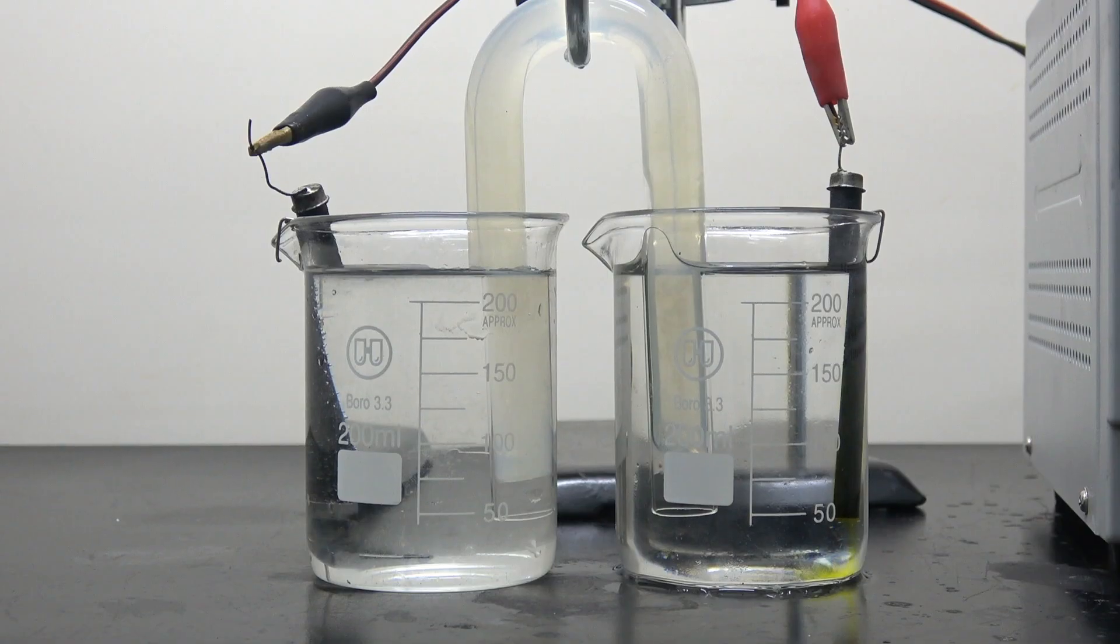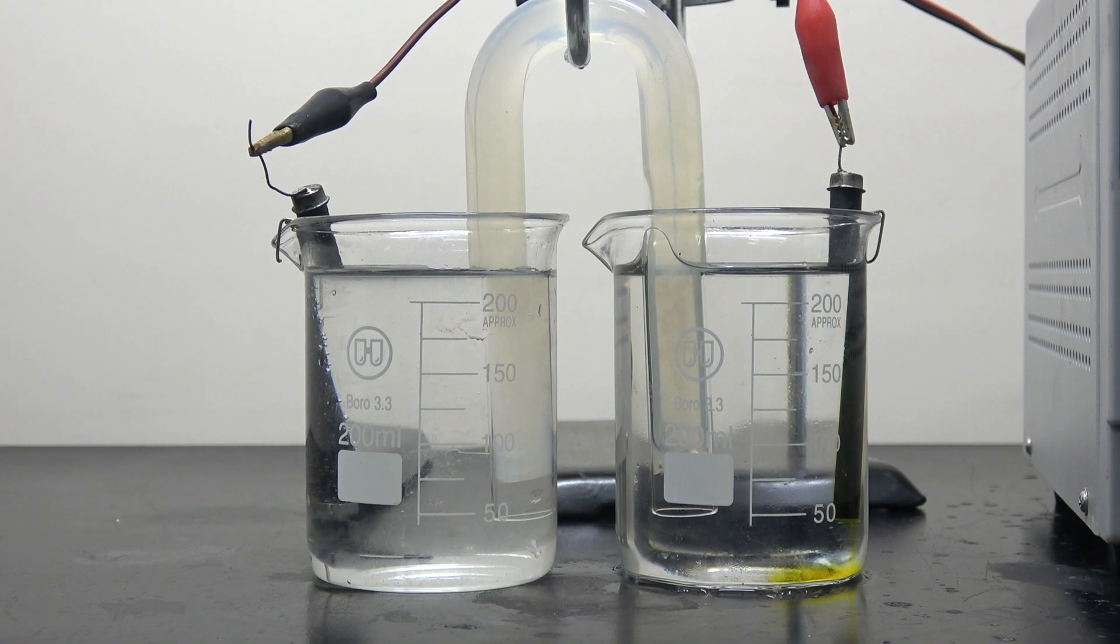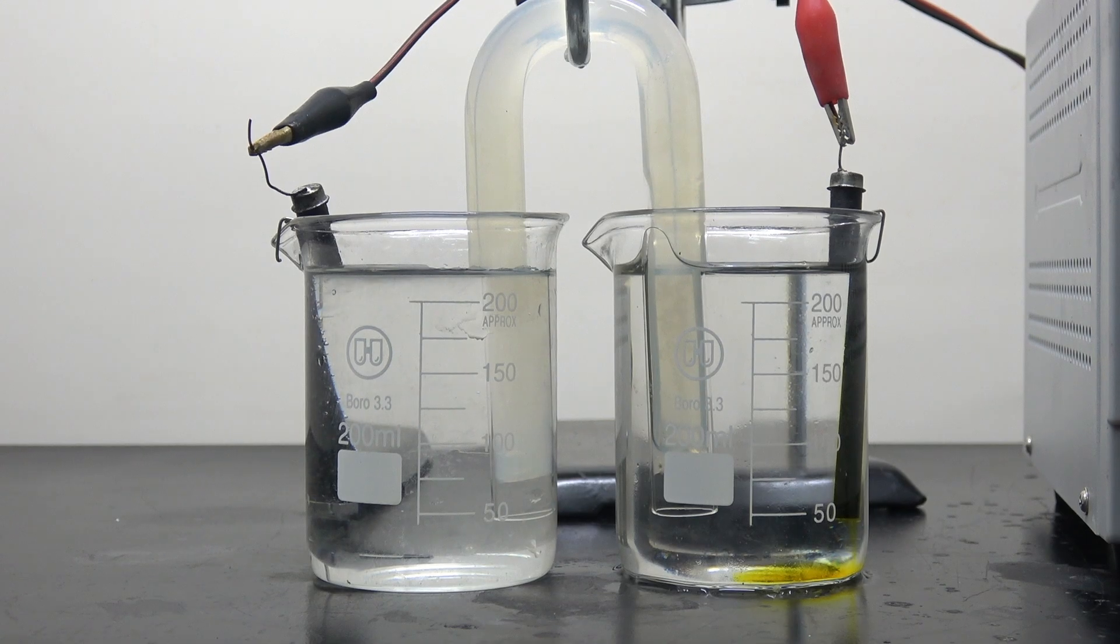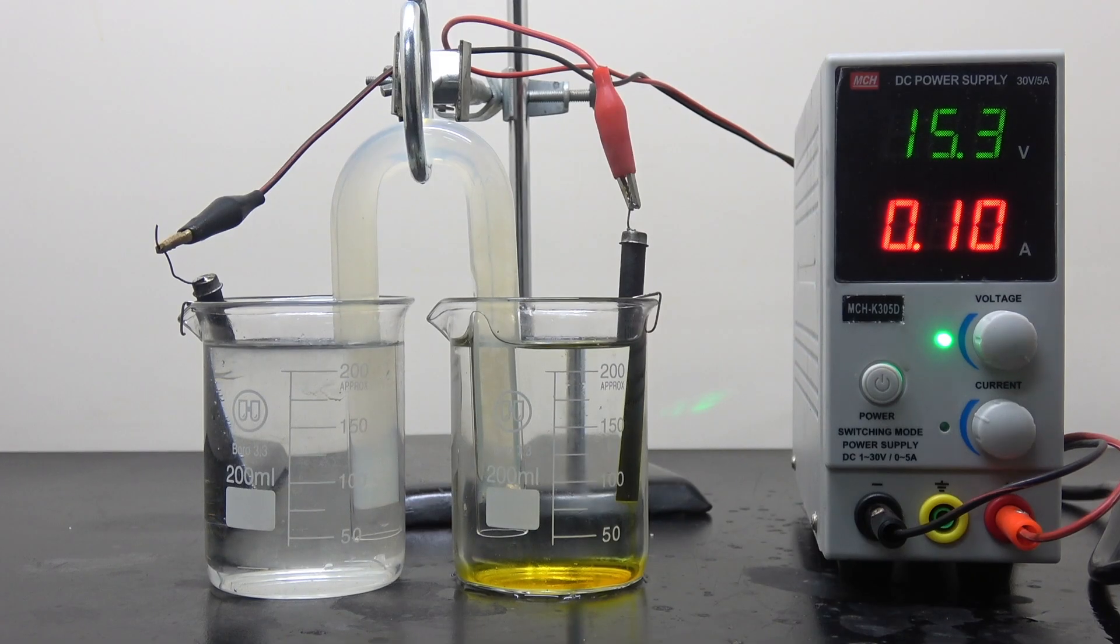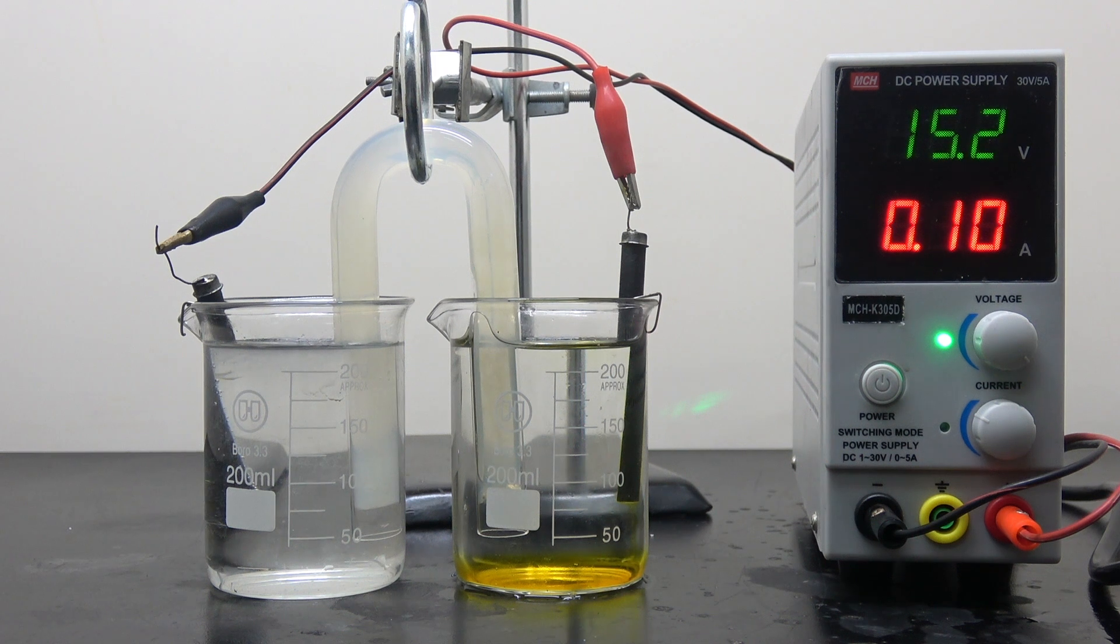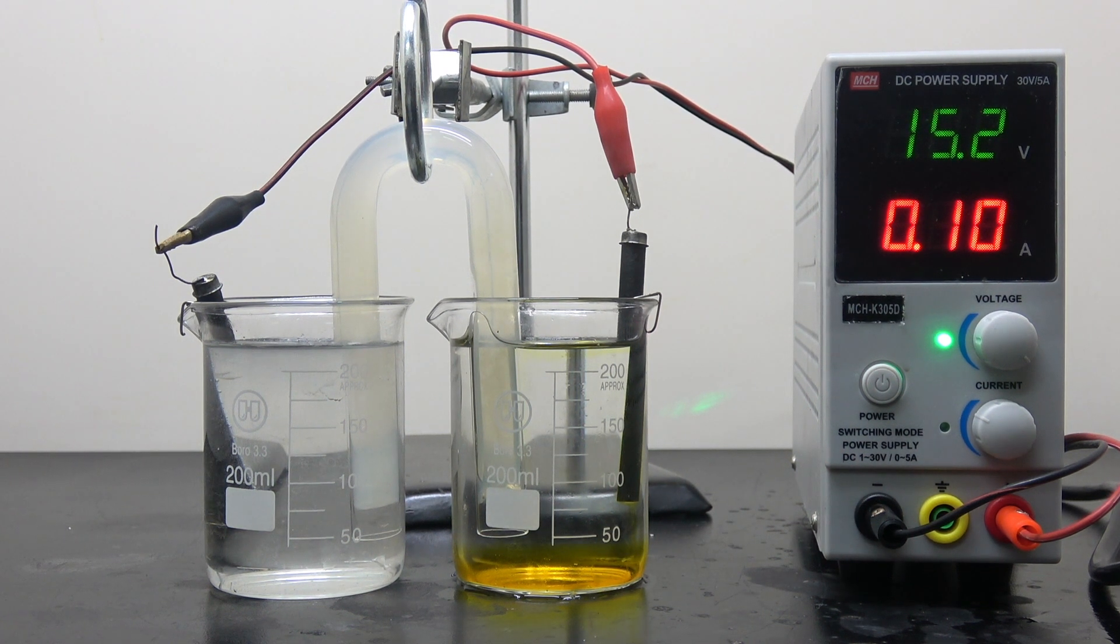As soon as I turn on the power, immediately we can see the brownish bromine is produced at the anode. It's important to keep the current relatively low, as the graphite electrodes will disintegrate over time, the rate of which increases exponentially when the current goes up.